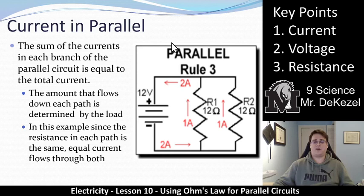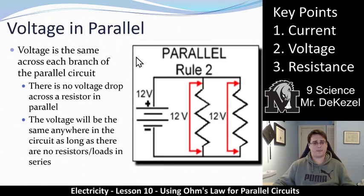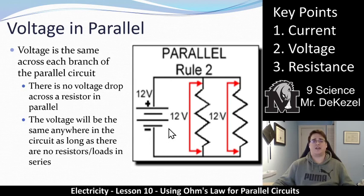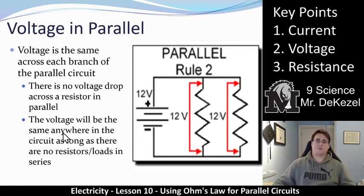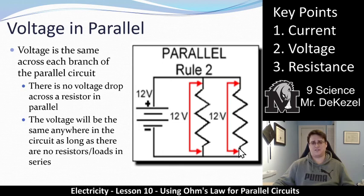So the current in the main line is two amps, while the current in each branch is one amp. It's very important that we understand that. In a series circuit, the current was the same throughout, but in parallel, that is not the case. Another difference is the voltage — key point two: voltage in parallel. The voltage is the same across each branch of the parallel circuit. This shows that 12 volts goes across each resistor. Essentially, there is no voltage drop — the voltage is not being used up when resistors are in parallel. They both get the complete voltage set by the battery. The voltage will be the same anywhere in the circuit as long as there are no resistors in series.